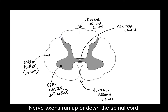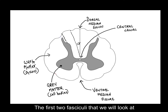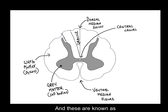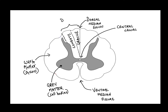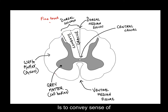Nerve axons run up or down the spinal cord in bundles known as fasciculi. The first two fasciculi travel at the back of the spinal cord and are known as the gracile and cuneate fasciculi. Collectively they are known as the dorsal column, and the primary function of the dorsal column is to convey the sense of fine touch and proprioception.